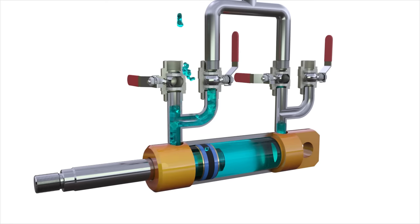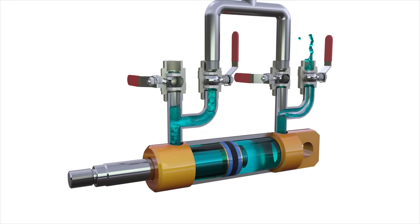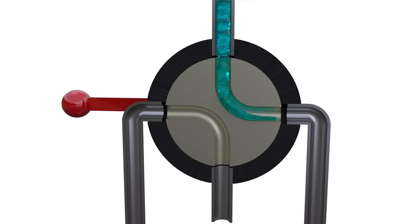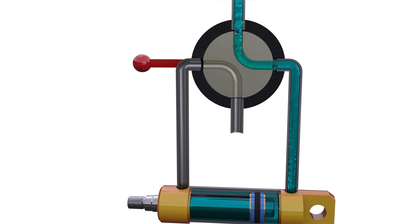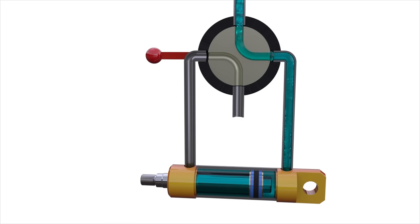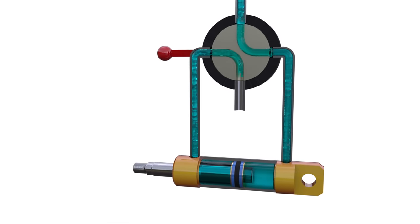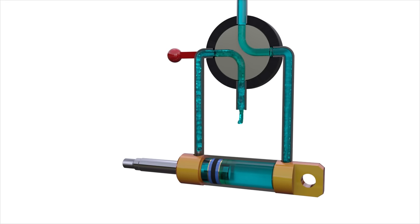It's definitely inconvenient to switch several handles simultaneously, so let's try to combine the valves into one element. Let's make two fitting channels in the shutoff and control element. Now, in one position, the directional control valve will connect the piston cavity with the pump and the rod cavity with the tank, while in the other position, it will connect the piston cavity with the tank and the rod cavity with the pump.